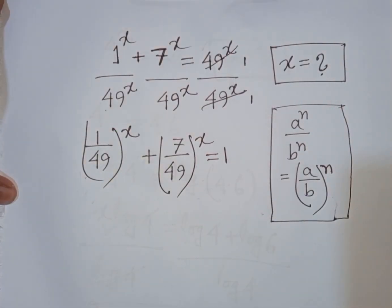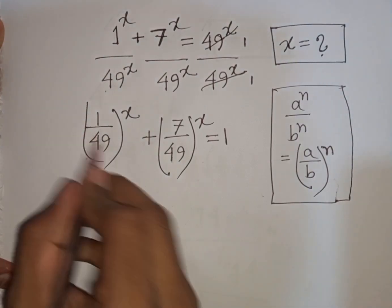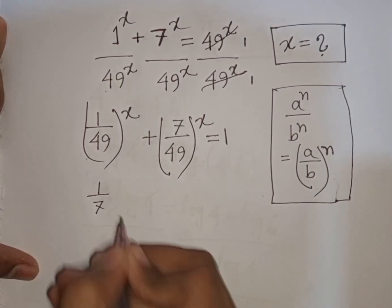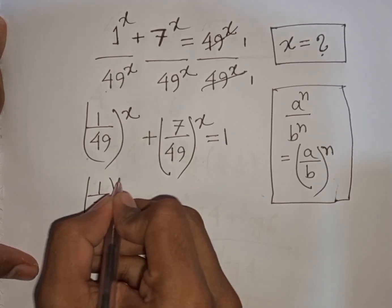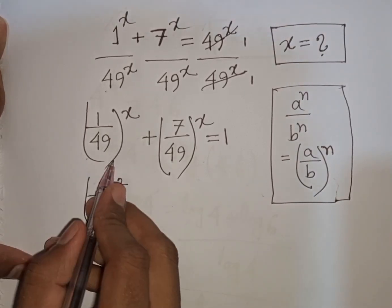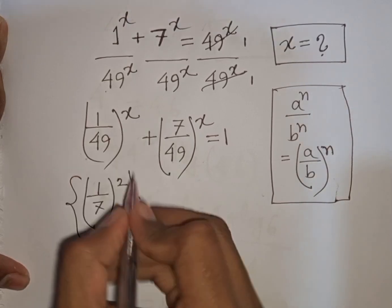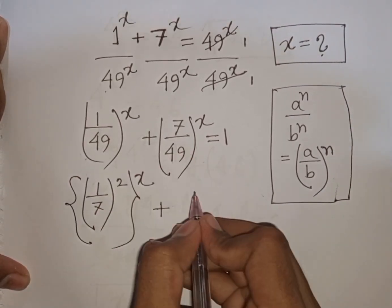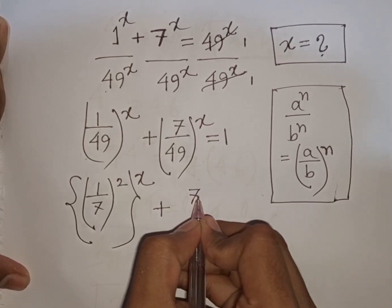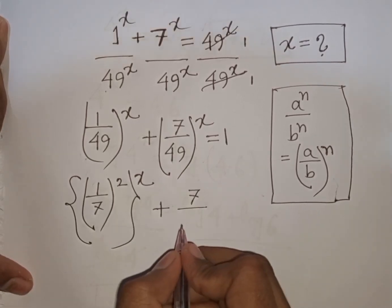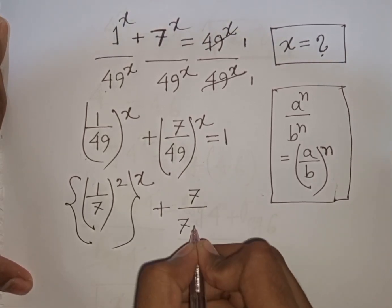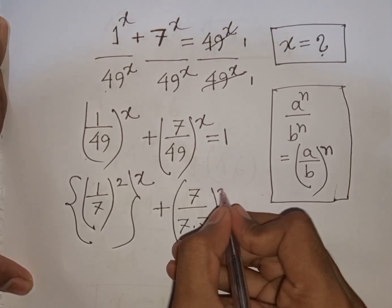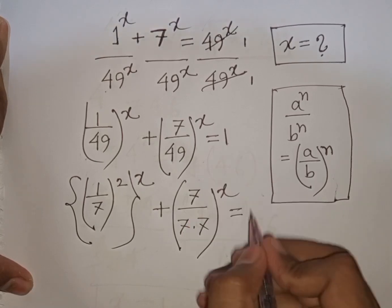Now 1 by 49 can be written as (1 over 7) bracket to the power of 2. Then this first bracket can be written as the second bracket to the power of x. And 7 over 49 equals 7 over 7 squared, so 1 over 7 bracket to the power of x equals 1.